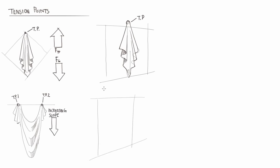Again we can repeat the fold in a more dynamic angle to reveal more about the forms. Each of those U-shapes has volume to it, which I'm indicating here with hatching.